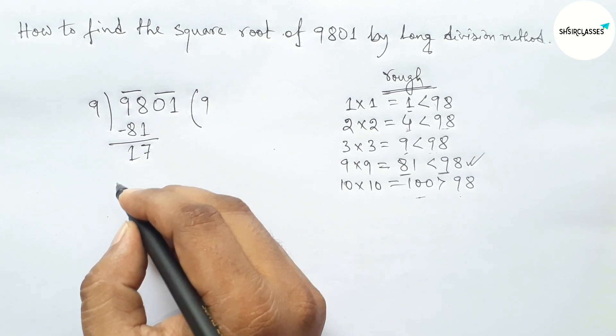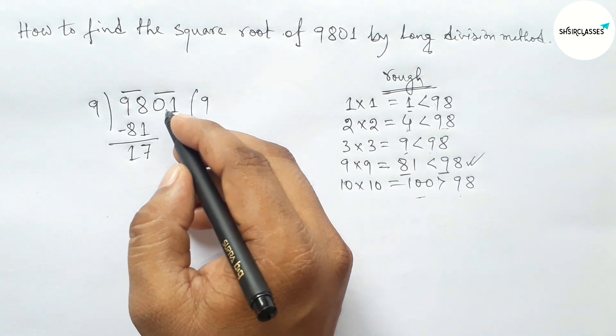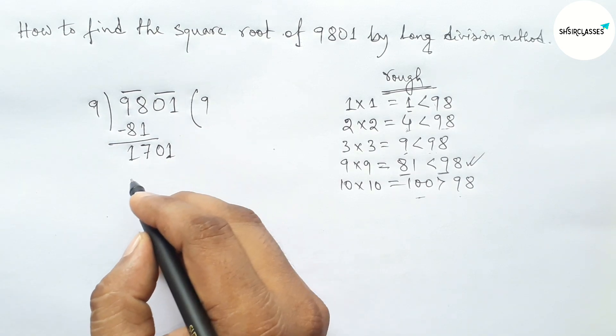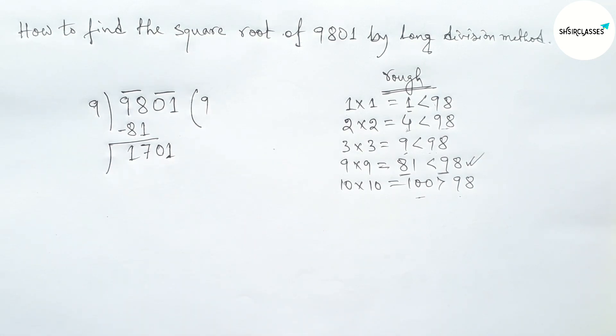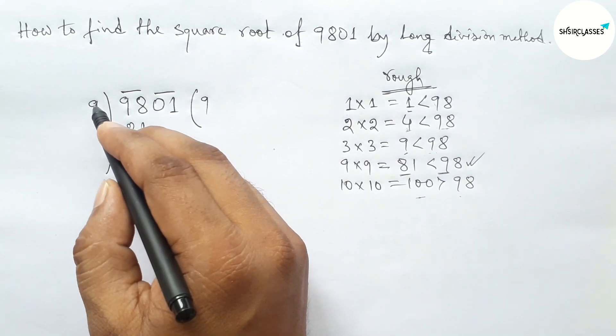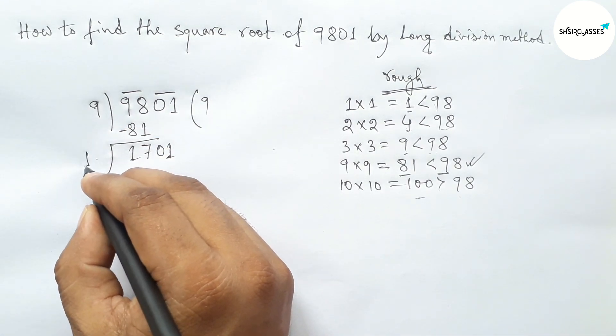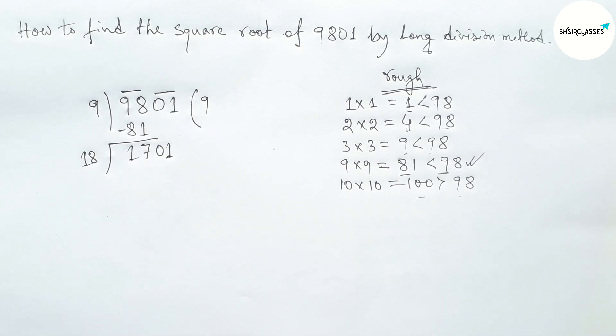Next, subtracting this, so here 17 and here 1, and write down here the second pair of number 01. Okay, and drawing here division line. Next, taking double of 9, so double of 9 equals 18.